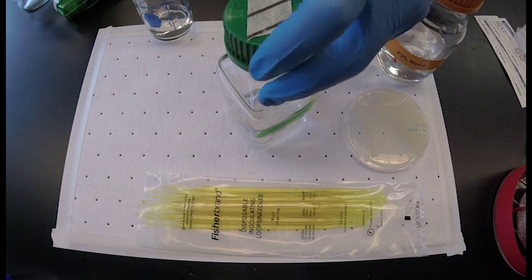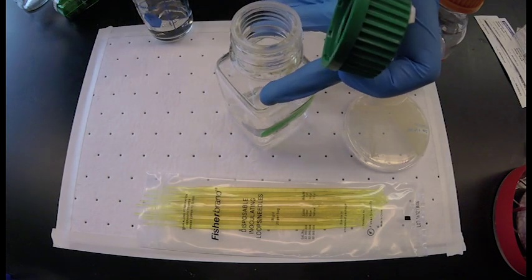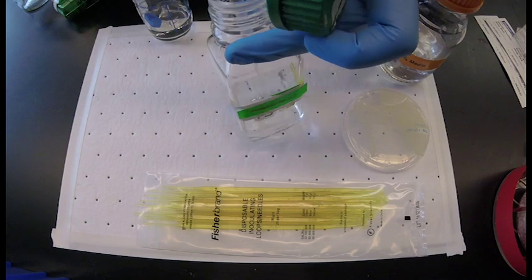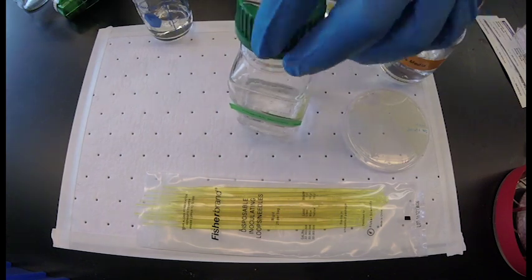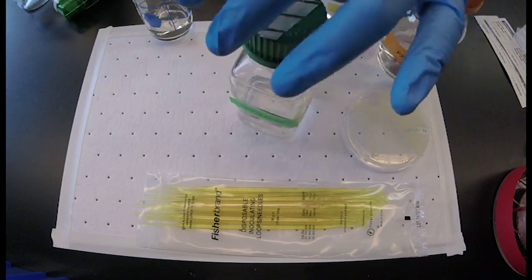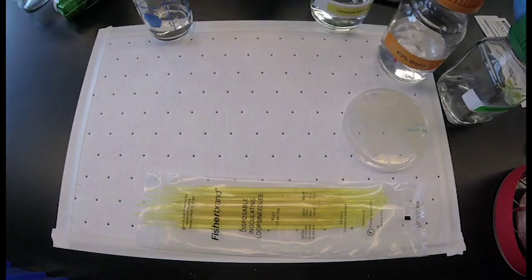There is half a milliliter of phosphate solution per 25 milliliters of P3%.